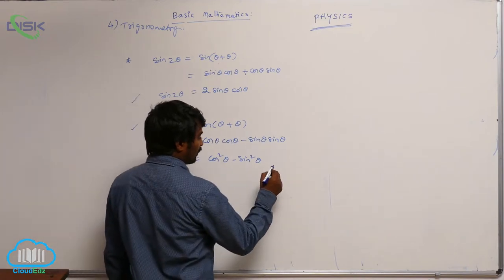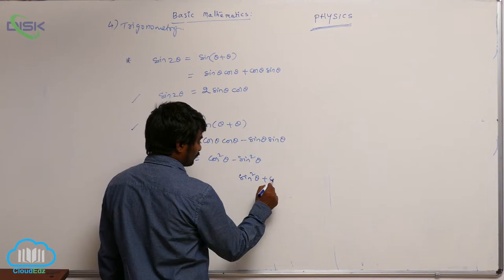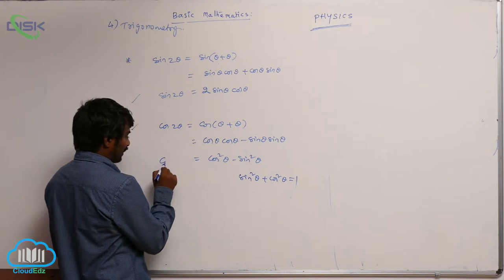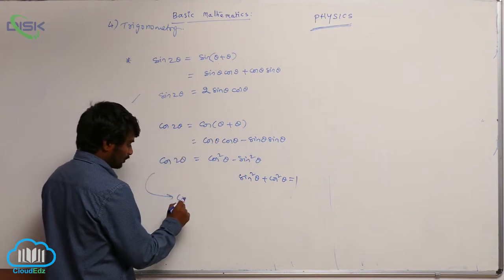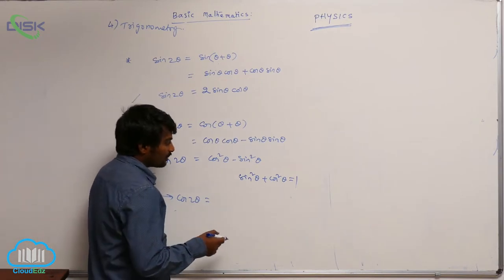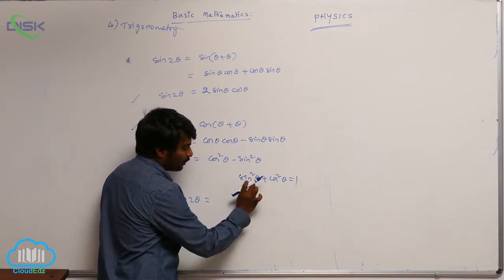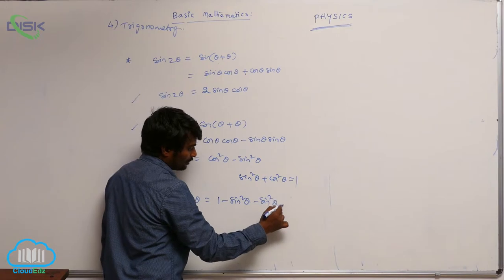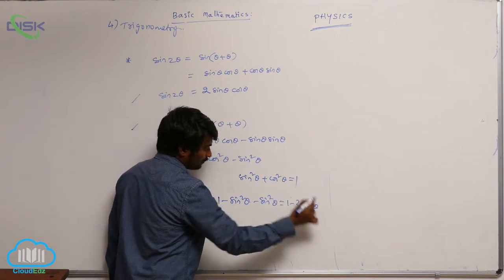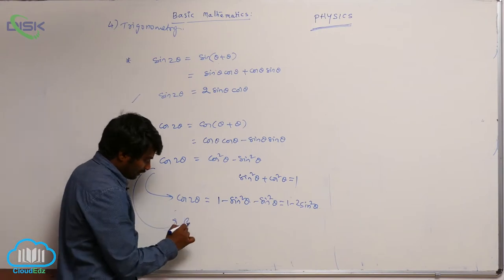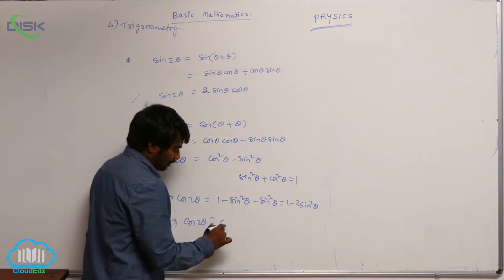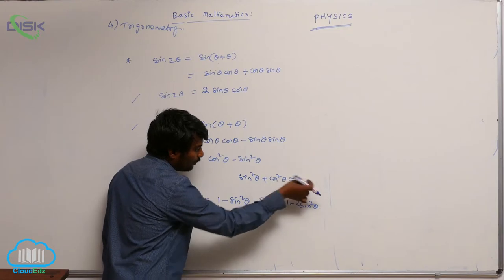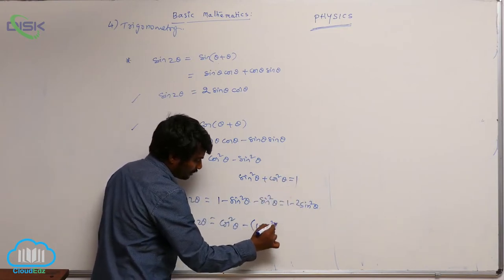We know that sin²θ + cos²θ = 1, so you can write cos 2θ in another form. Instead of cos²θ, write 1 − sin²θ, giving cos 2θ = 1 − sin²θ − sin²θ = 1 − 2sin²θ. Or you can write cos 2θ = cos²θ − (1 − cos²θ).